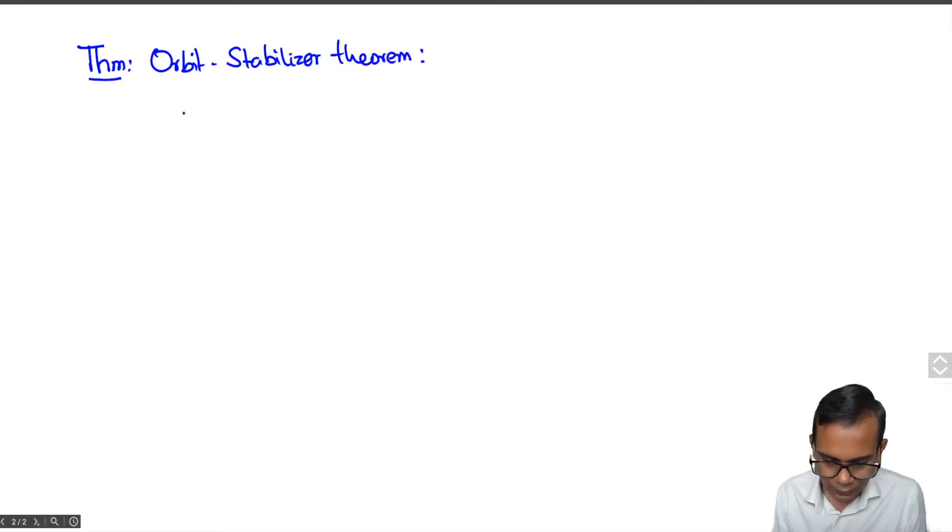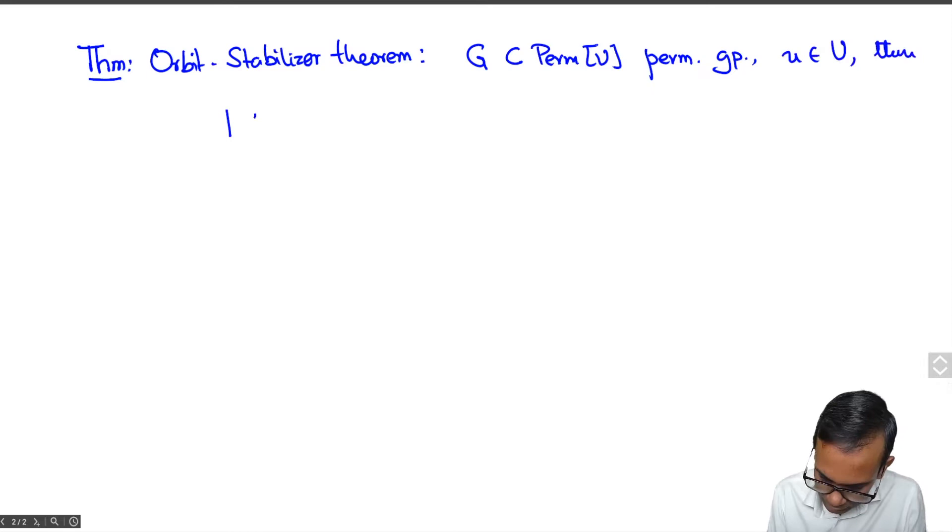It says that suppose G is a permutation group, then the cardinality of G is equal to the cardinality of the orbit of U times the cardinality of the stabilizer of U. You need to be careful here a bit with the notation. GU looks very similar to G subscript U. So be careful which one I am writing and the proof is actually very straightforward.